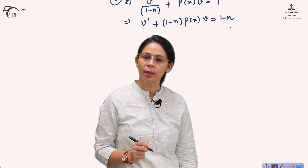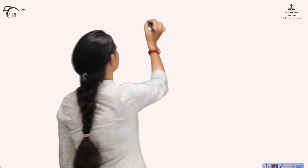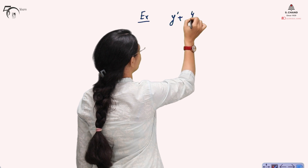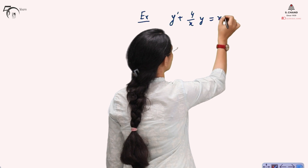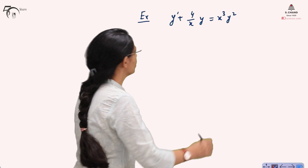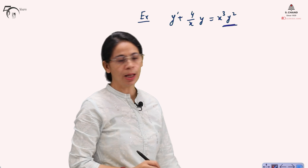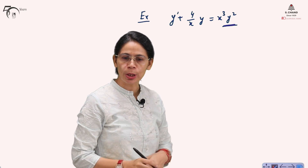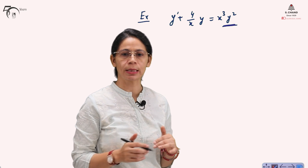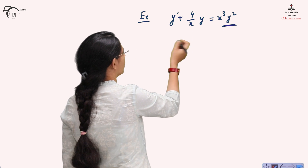We will take one example. Let: y' + (4/x)y = x³y². We need to determine whether it is a Bernoulli equation. Since it involves y², it is indeed a Bernoulli equation — it is a first-order non-linear differential equation in Bernoulli form. Comparing with the standard form, y^n = y², so n = 2.